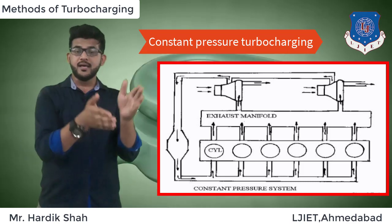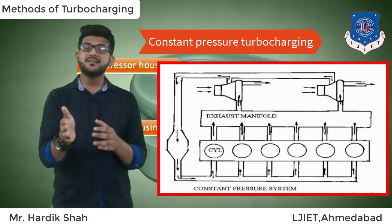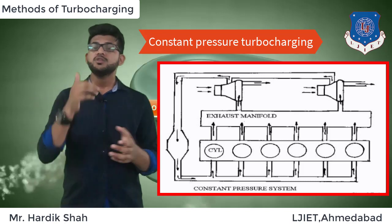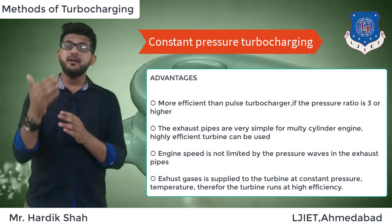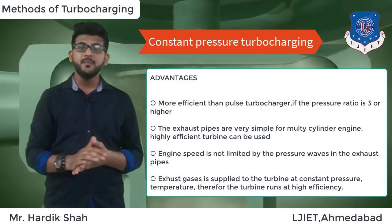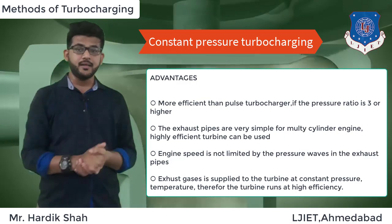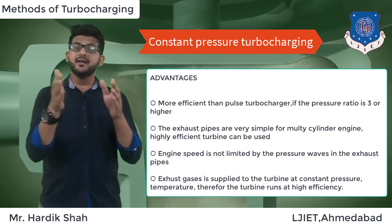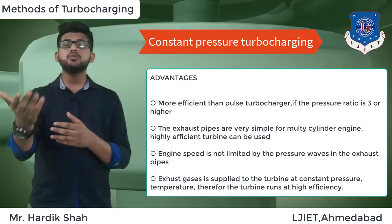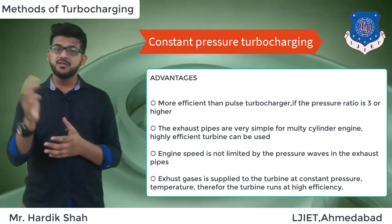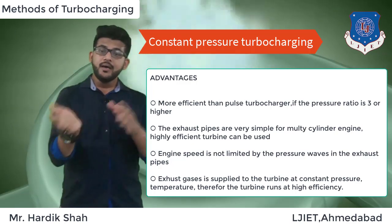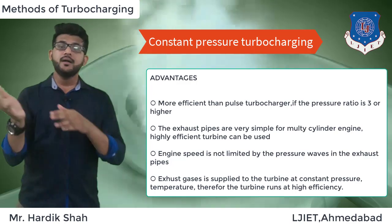The exhaust gases are maintained at constant pressure to operate this system, so at the inlet of the turbine, pressure is constant throughout the whole cycle. This type of engine is used in many automotive engines and is called the basic turbocharged engine. The advantages are: it is more efficient than the pulse turbocharger when the pressure ratio is three or higher; the exhaust pipes are very simple for multi-cylinder engines, making construction easier; and it is a highly efficient turbine with no engine speed limitation for pressure wave generation.